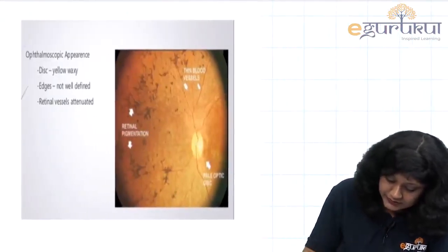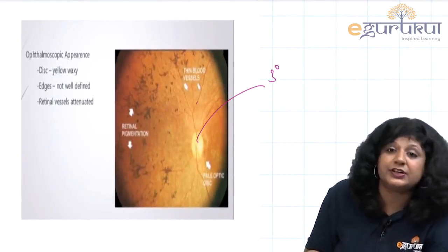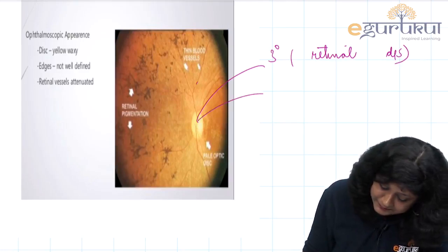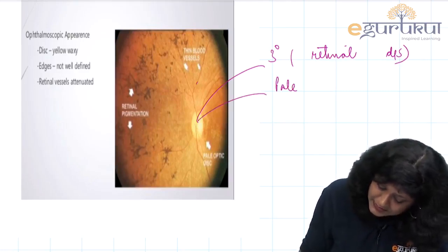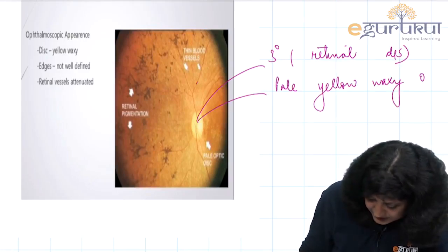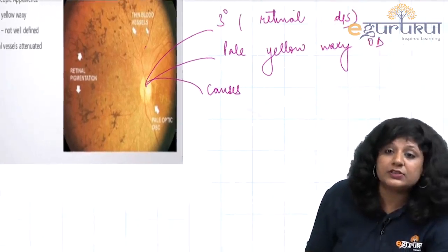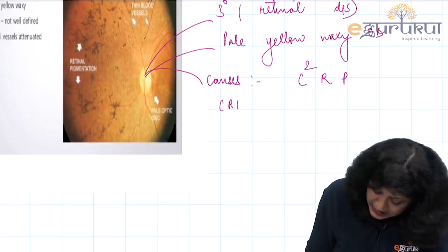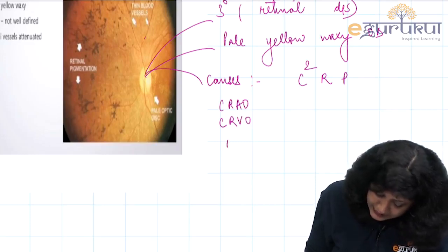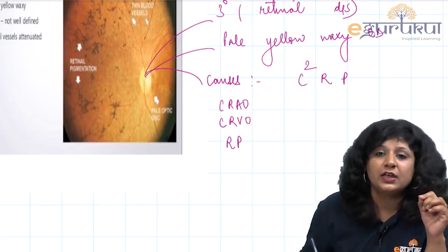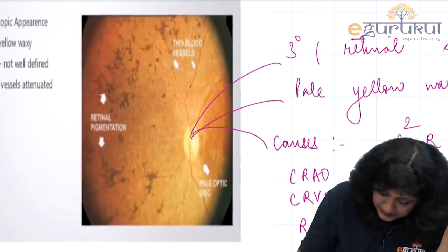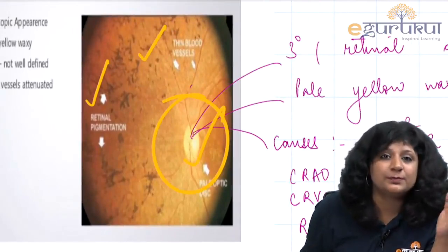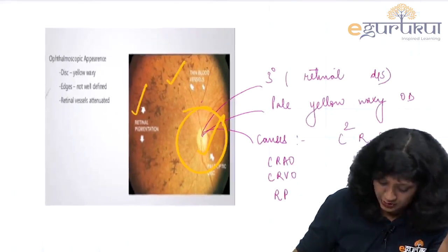In tertiary optic atrophy, retinitis pigmentosa presents with thin blood vessels, retinal pigmentation, and a pale yellow waxy optic disc.